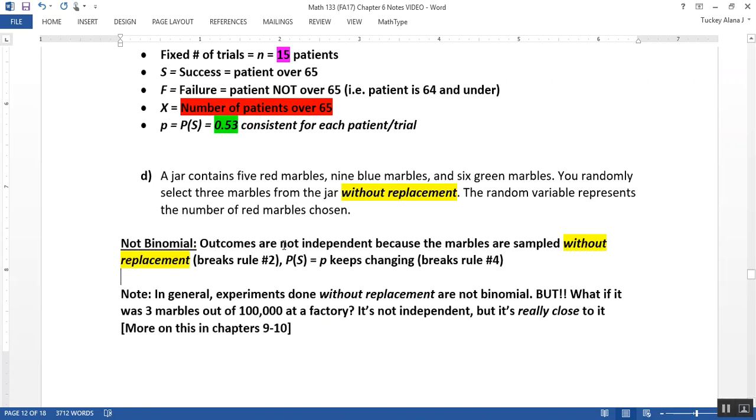And that's what I wrote up. So the outcomes are not independent because the marbles are sampled without replacement. And that breaks rule number two, the whole independence thing. And keep in mind, it also breaks rule number four because the probability of success, which is lowercase P, keeps changing. So when you're doing without replacement, or when you're sampling without replacement, you actually break two rules at the same time.